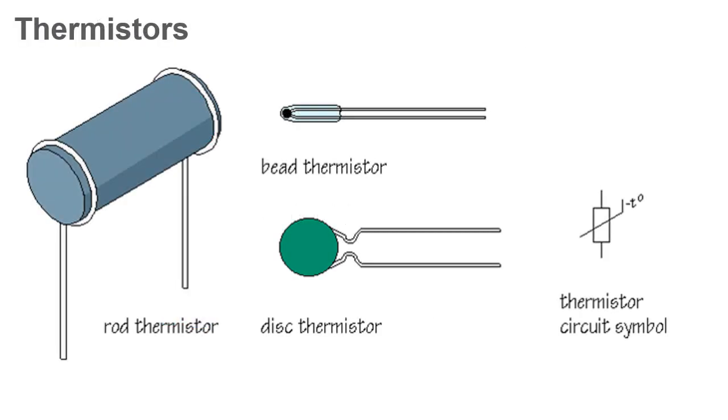Thermistors, like RTDs, are active measurement devices that operate by changing resistance with changes to ambient temperature. They consist of a metal oxide semiconductor pressed into a small bead, disc, wafer, or other container, and coated with epoxy or glass.